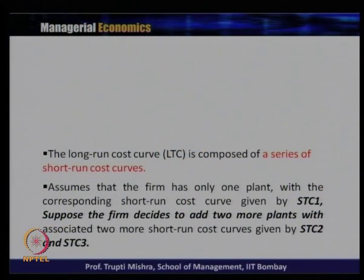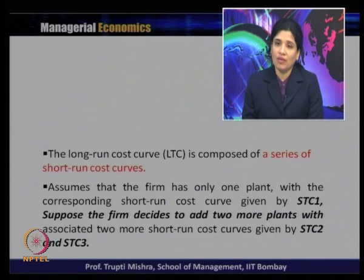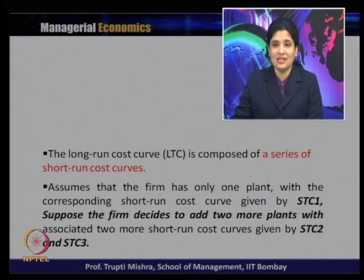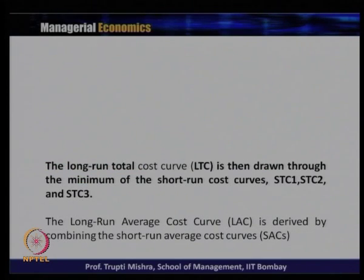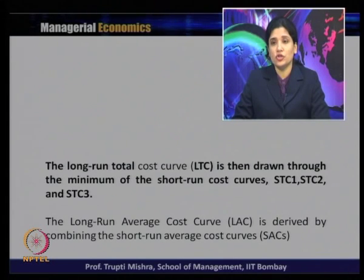The long run total cost is composed of a series of short run cost curves. When you take more than two or three short run cost curves, that gives us the long run cost curve. Assume the firm has one plant with short run cost curve STC1, and the firm decides to add two more plants with STC2 and STC3. Taking all three — STC1, STC2, and STC3 — together leads to the long run total cost curve. Similarly, the long run average cost curve is derived by combining the short run average cost curves.